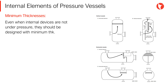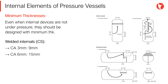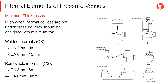Even when internal devices are not under pressure, they should be designed following minimum thickness requirements. For carbon steel welded internal supports, the following minimum requirements shall be applied: when corrosion allowance for the vessel is 3 mm, a 9 mm minimum thickness shall be used for internals; and when the corrosion allowance requirement is 6 mm for the vessel, a 15 mm minimum thickness shall be used for internals.